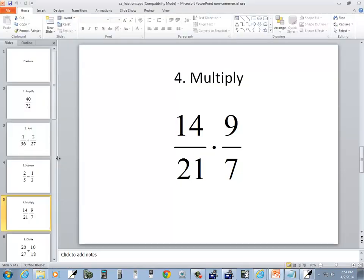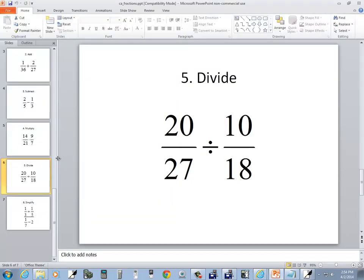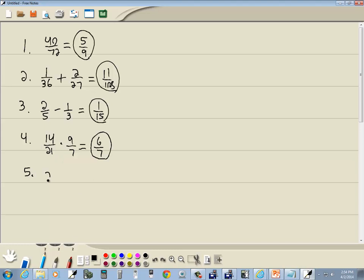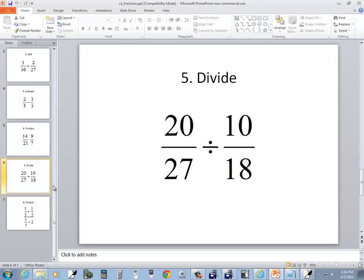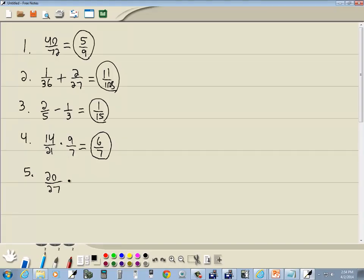Our fifth one. Division. This is one you have to do a little bit different. 20 over 27 divided by 10 eighteenths. Now, when you're dividing a fraction by a fraction, what you have to do is put the first fraction inside of parentheses and put the second fraction inside of parentheses. Otherwise, it will not work.